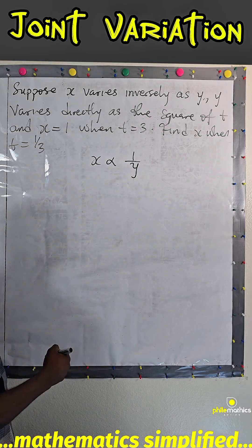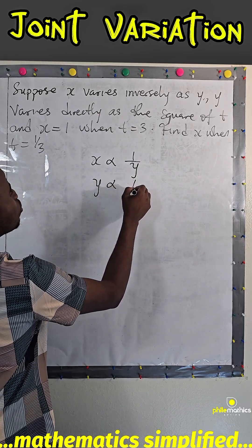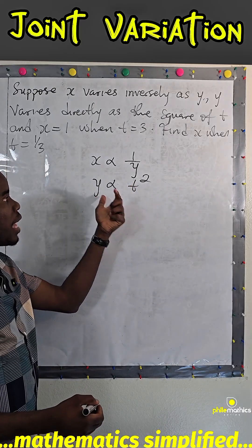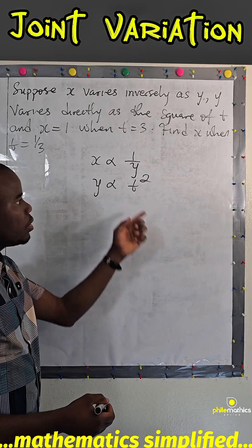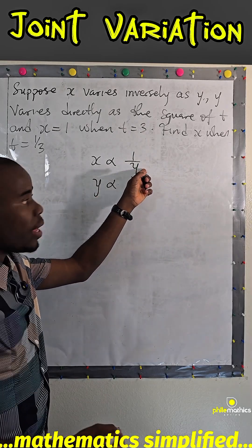This is how we write it. Y varies directly as the square of t. Since y varies as the square of t, meaning as y increases, t square increases also, so we can replace y here with t square.